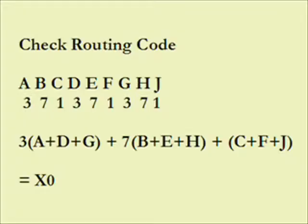Let's look at checks. Checks have a two-component number: the routing code and the account number. The routing code must follow a formula to make it legitimate. That is, the first of each of the three numbers times three, plus the second of each of the three numbers times seven, plus the third of the three numbers times one — must all add up to a multiple of ten. Otherwise, it's not legitimate.